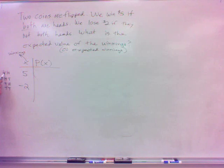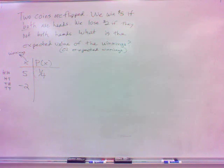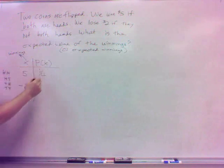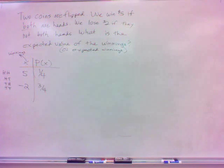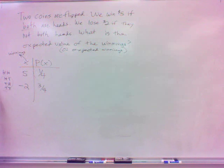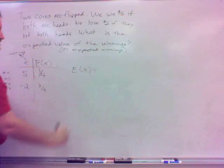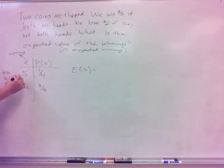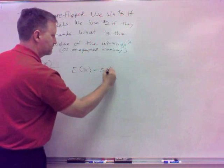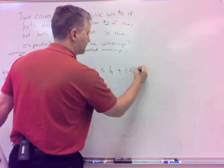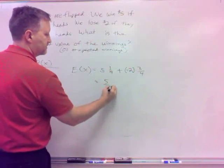Now I need the probabilities. The probability I win $5 is the probability of getting both heads. Listing all outcomes — HH, HT, TH, TT — the probability of both heads is one-fourth. The probability I lose $2 is the probability I don't get both heads, which is three-fourths. So: x = 5 with p(x) = one-fourth, and x = -2 with p(x) = three-fourths. Three out of four times I'm going to lose $2.